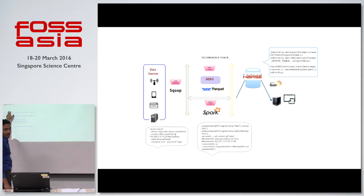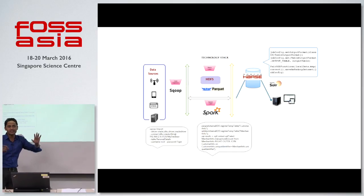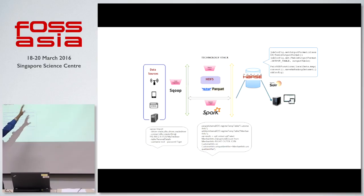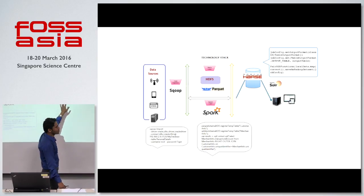For querying, we use Spark. Spark SQL is much faster — even 100 times faster than traditional SQL — if you have that much big data. Whatever results we have, we store in HBase in a key-value pair. Every key has a value. We then transfer that data into Solr for indexing, and whatever insights we have, we show in the portal.